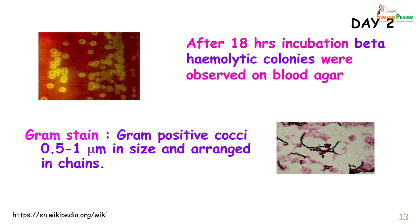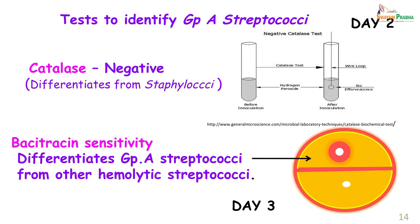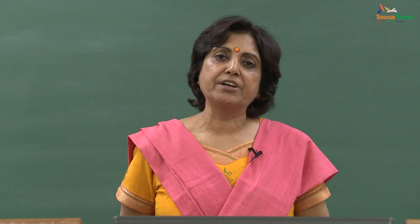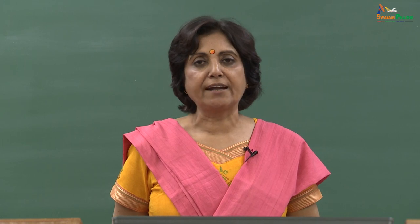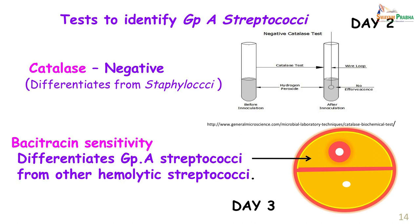On day 2, beta-hemolytic colonies were observed on blood agar, and a smear again showed gram-positive cocci arranged in chains. Further tests were done to identify the group A streptococci. The catalase test was negative — this test helps differentiate streptococci from staphylococci, which are catalase positive. The test consists of dipping the colony in hydrogen peroxide; if bubbles appear it is catalase positive, if there is no effervescence it is catalase negative. The next test was bacitracin sensitivity, where after 18 hours incubation a zone of inhibition around the bacitracin disc indicated sensitivity, confirming these were group A streptococci.